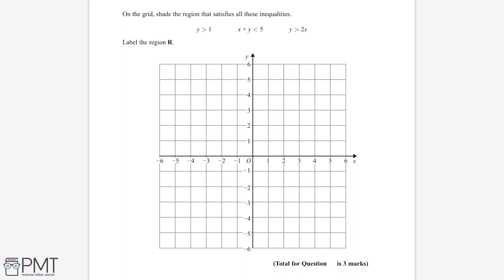So the first thing we're going to want to do is draw each of these three lines onto this graph. Now in order to do this, we're going to change the inequality signs to equal signs. So this tells us that y will be equal to 1, x plus y will be equal to 5, and y will be equal to 2x.